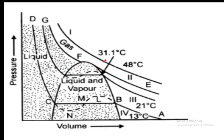The isotherm at 31.1 degrees centigrade does not have a horizontal portion — it is reduced to a single point which is the critical point F. This corresponds to the critical temperature of 31.1 degrees centigrade. Carbon dioxide can be liquefied at this temperature, and the critical point is F, corresponding to the critical pressure.